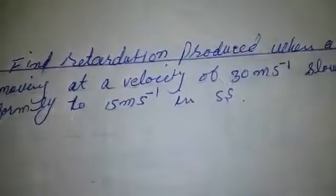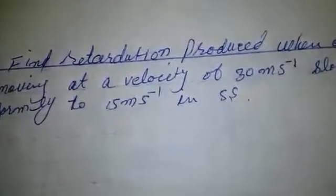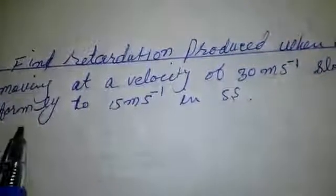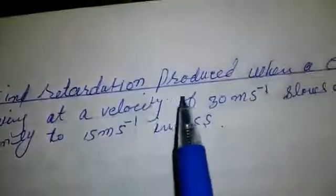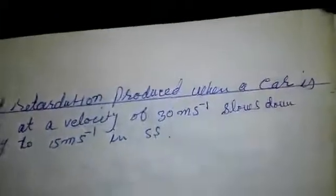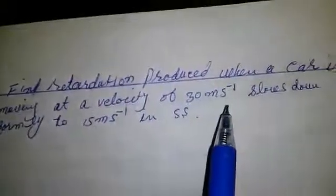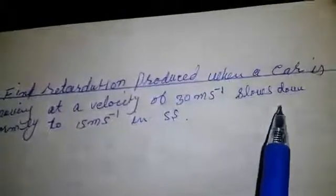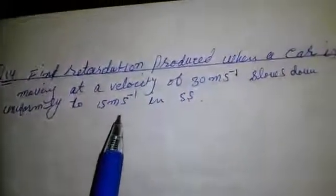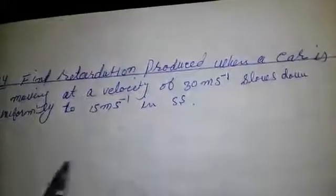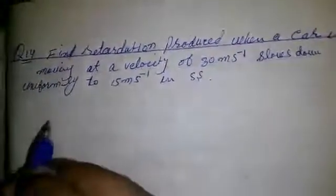Bismillahirrahmanirrahim. Today we are going to solve a word problem from kinematics physics. Find retardation produced when a car is moving at a velocity of 30 meters per second, slows down uniformly to 15 meters per second in 5 seconds. Let's solve this.